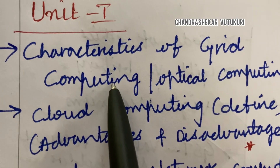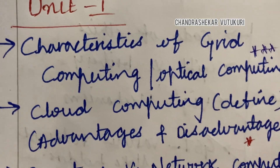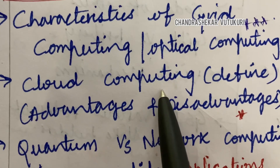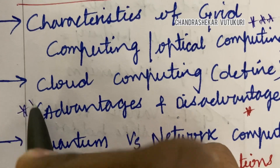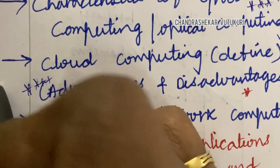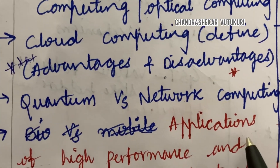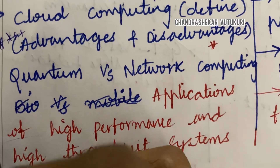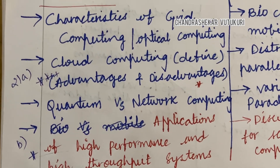Characteristics of Grid Computing as well as Optical Computing is said to be one of the topmost questions in both Part A and Part B. Cloud Computing — defining the term and the advantages and disadvantages — is said to be one of the gunshot questions this time in the question paper. Network Computing and the applications of High Performance and High Throughput Systems is also said to be one of the topmost questions.